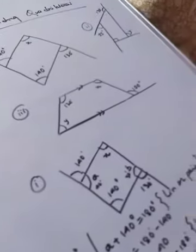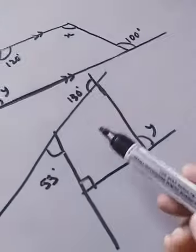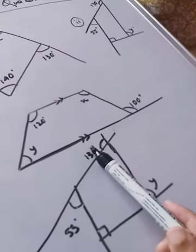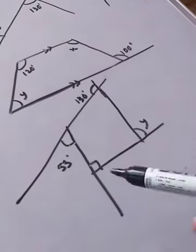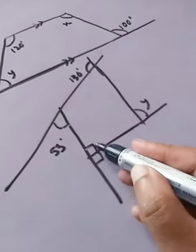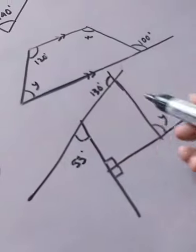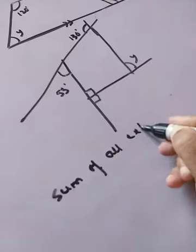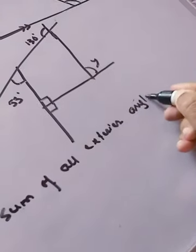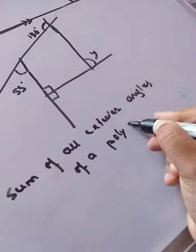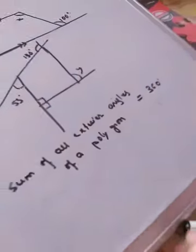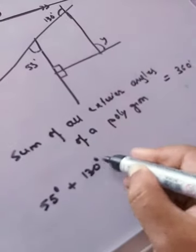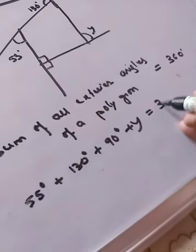Let's look at question number two. We have exterior angles: 55°, 130°, 90° (and since the interior angle is 90°, the corresponding exterior angle is also 90°). All exterior angles are given. As we know, the sum of all exterior angles of a polygon equals 360°. So: 55° + 130° + 90° + y = 360°.